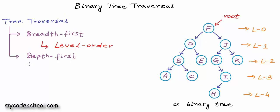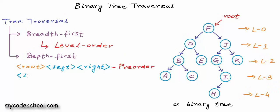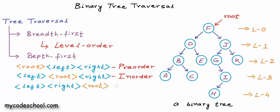Based on the relative order of left subtree, right subtree, and the root, there are three popular depth-first strategies. One way is to first visit the root node, then the left subtree, and then the right subtree — left and right subtrees visited recursively in the same manner. Such a traversal is called pre-order traversal. Another way is to first visit the left subtree, then the root, and then the right subtree — such a traversal is called in-order traversal. And if the root is visited after left and right subtrees, that is called post-order traversal.